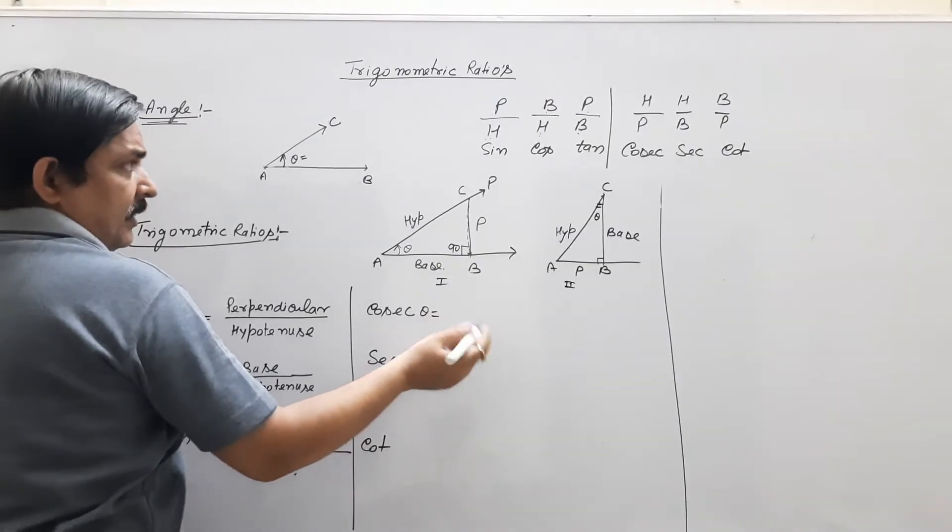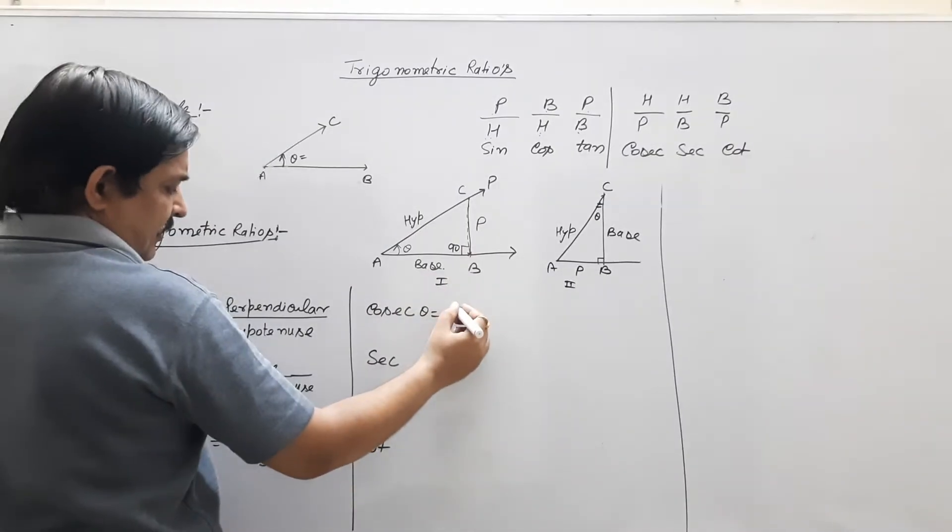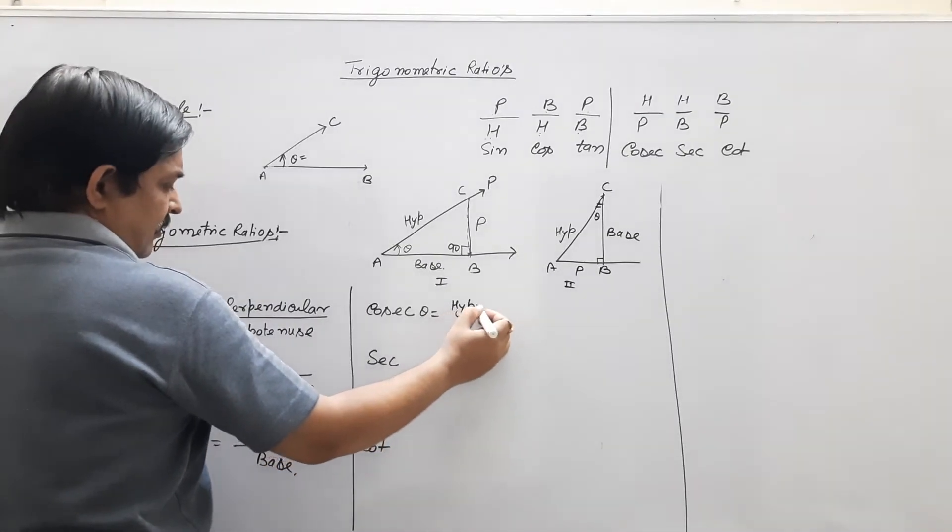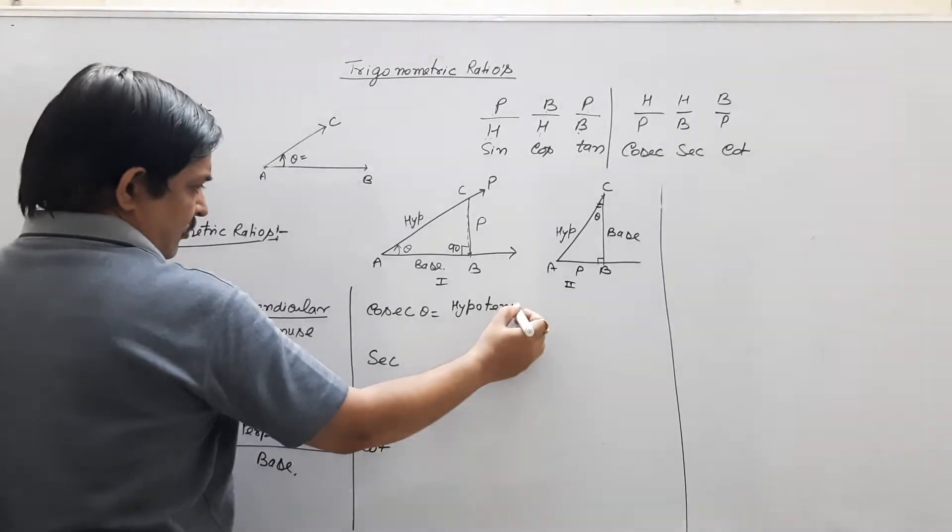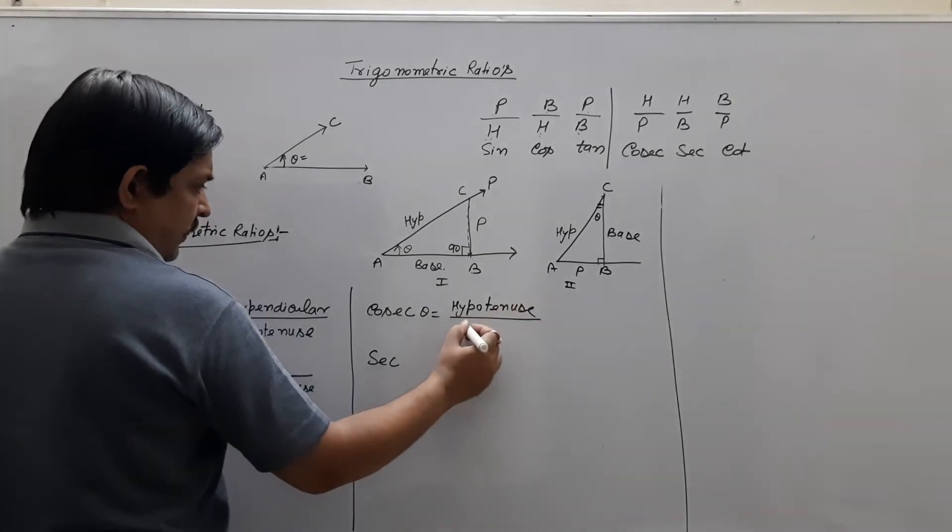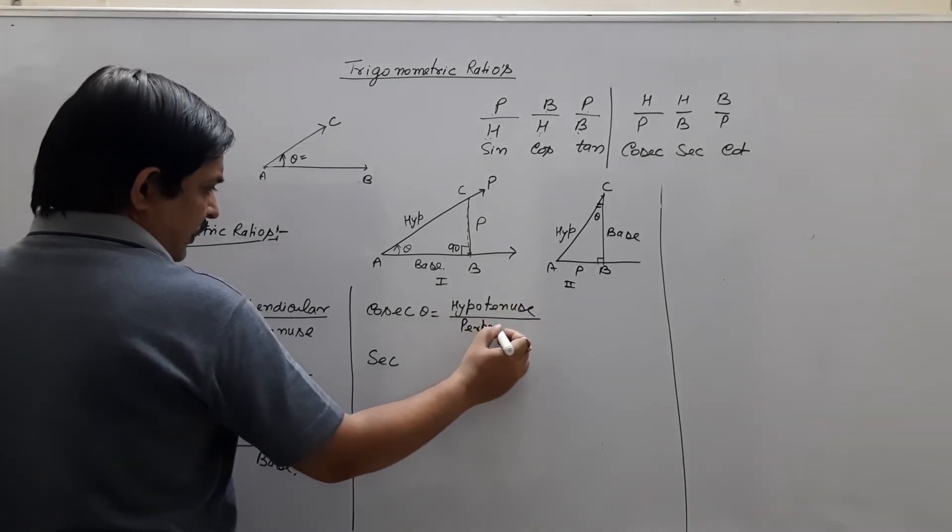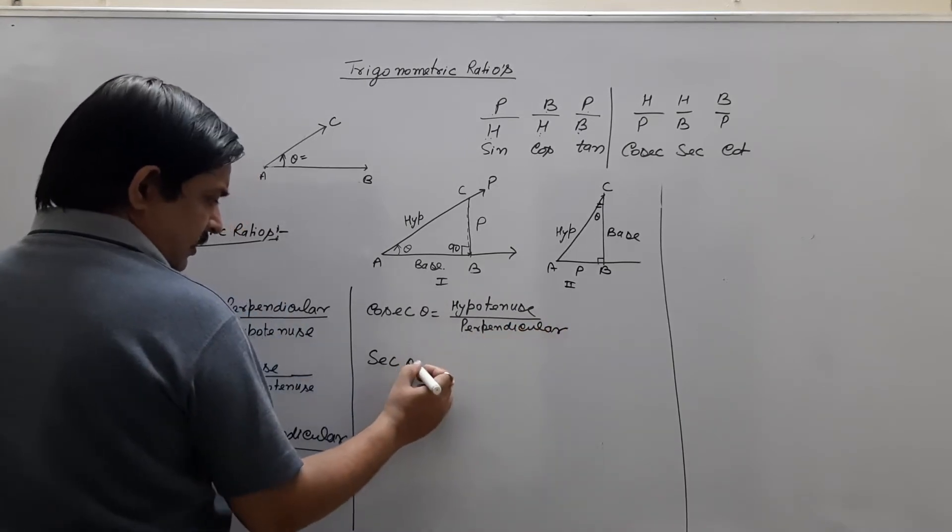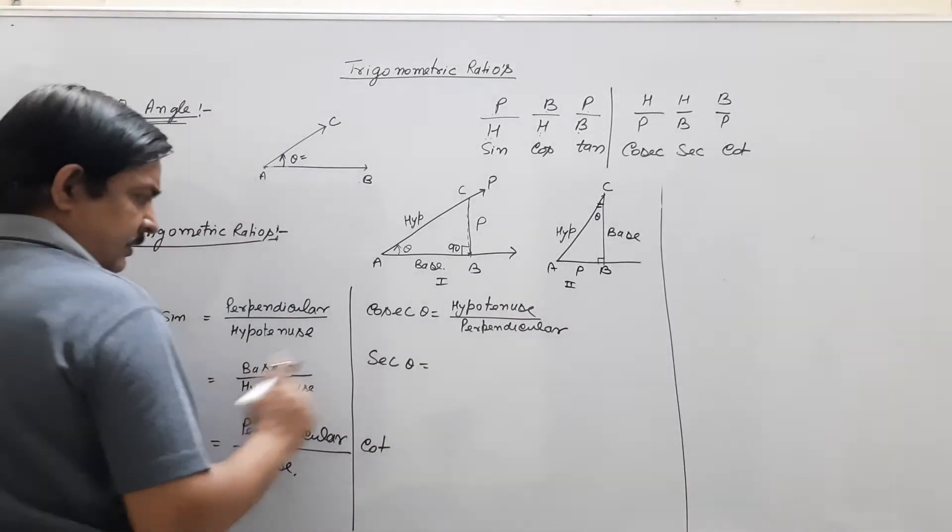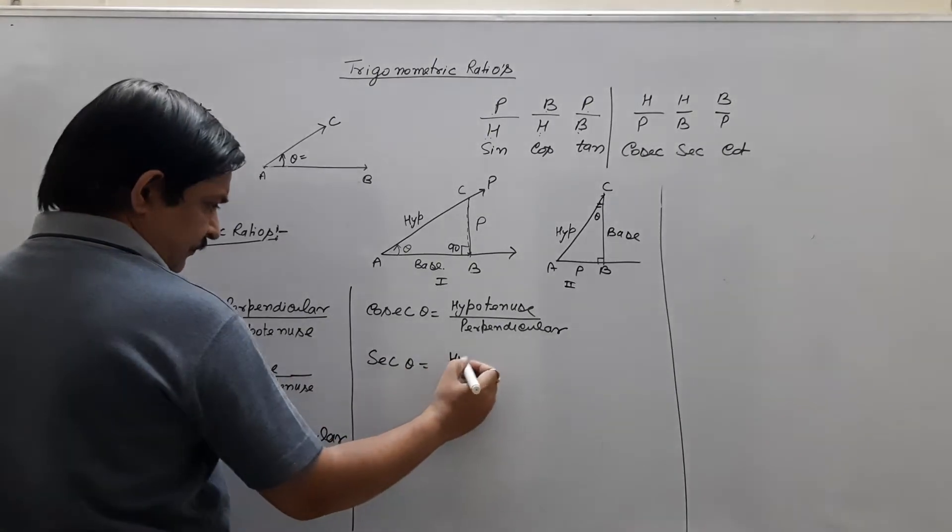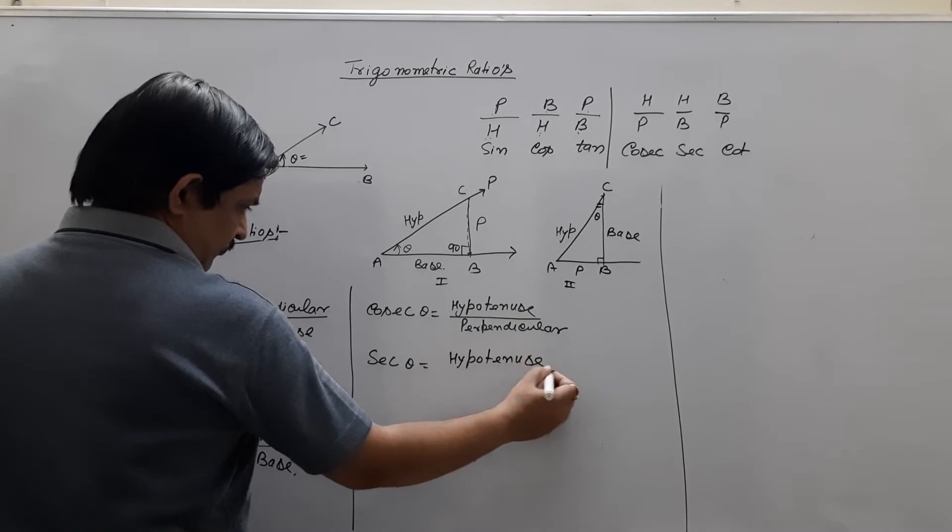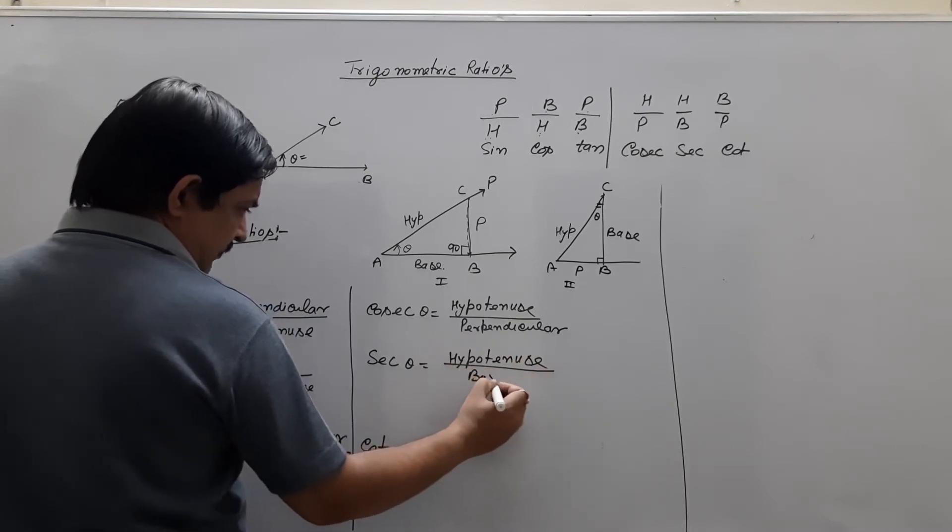Cosec theta is a reciprocal of sin, it means hypotenuse divided by perpendicular. Reciprocal of cos, sec theta, hypotenuse divided by base.